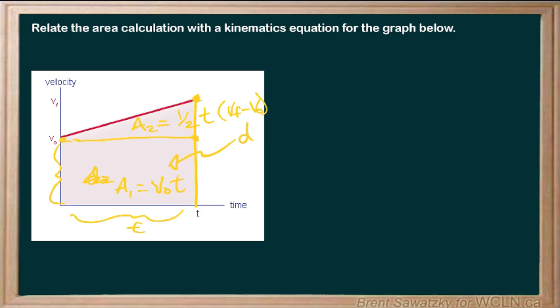And so let's rearrange that a little bit. So if we were correct in what we're trying to figure out, the displacement, total displacement of this object is going to be A1 plus A2. And our A1 is V naught T. And our A2 is one half T times VF minus V naught.